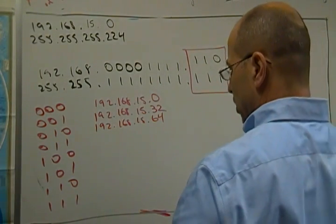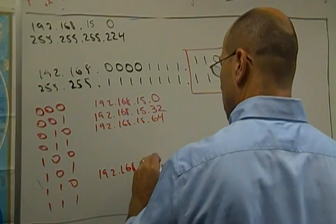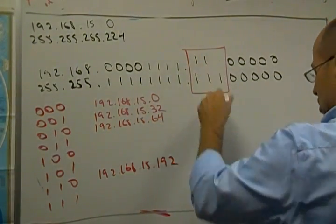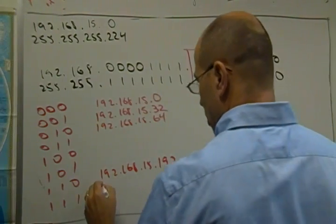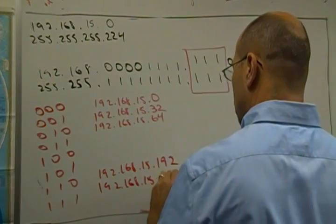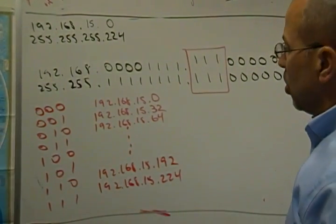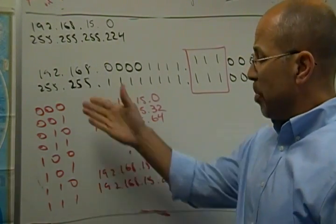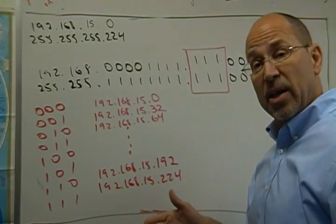So this address way down here, and that makes this one 192.168, whoa, 15.224. All right, so there's my range of addresses. So what we've done here is instead of doing the division, we took a look at the binary patterns, substituted them into the subnet field and got all of our subnet IDs.